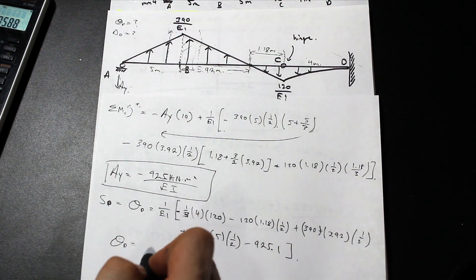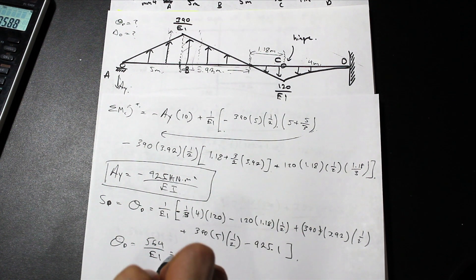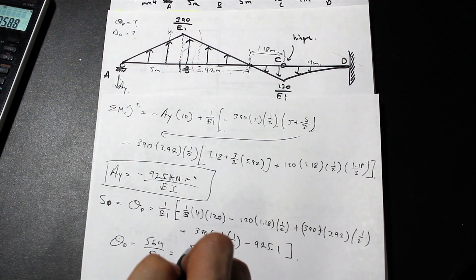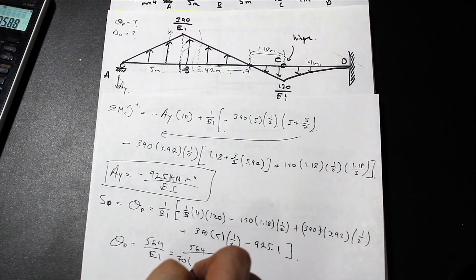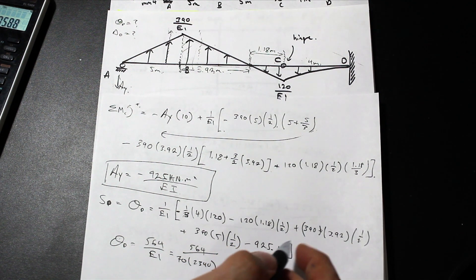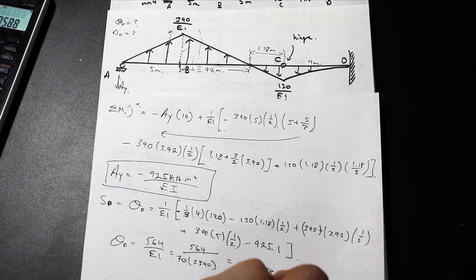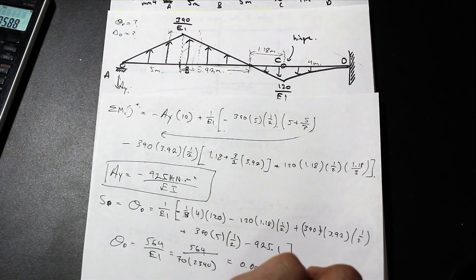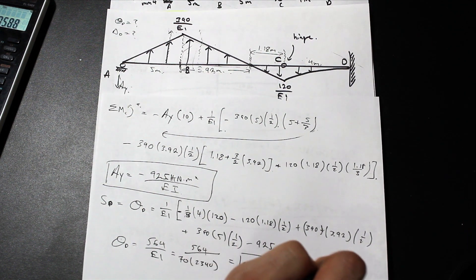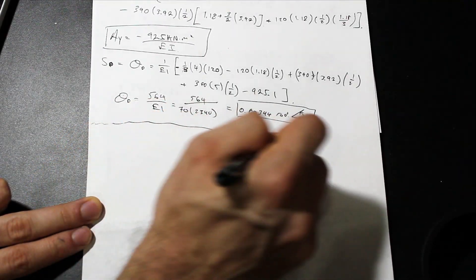Adding everything up, we get a slope at D of 564 over EI. Dividing by our EI value — 70 times 2340 — gives 0.00344 radians. Since the value is positive, the rotation is counterclockwise by our sign convention.